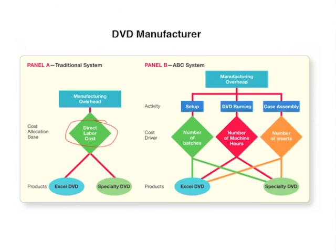In the ABC costing system, we take manufacturing overhead and determine the activities that our products go through. Here we've determined that each DVD goes through setup, DVD burning, and case assembly, and in this case each product went through each activity. There may be times where one product goes through two activities and another goes through three. We also have a cost driver for each activity, and the cost driver does not necessarily have to be the same for each activity. For setups, the cost driver is number of batches; for DVD burning, it's number of machine hours; and for case assembly, it's the number of inserts.